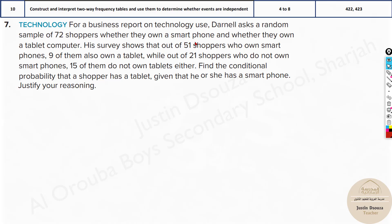For a business report on technology use, Darnell asks a random sample of 72 shoppers whether they own a smartphone and whether they own a tablet computer. His survey shows that out of 51 shoppers who own smartphones, 9 of them also own a tablet, while out of 21 shoppers who do not own smartphones, 15 of them do not own tablets either. Find the conditional probability that a shopper has a tablet given that he or she has a smartphone. Justify your answer.